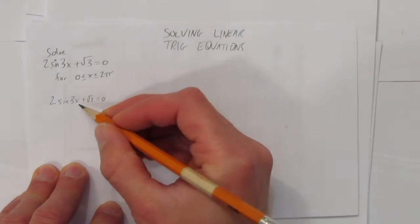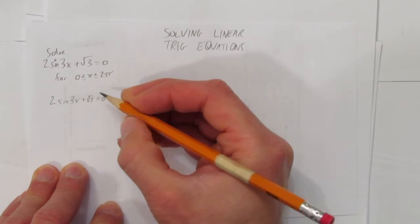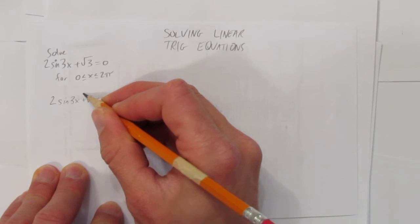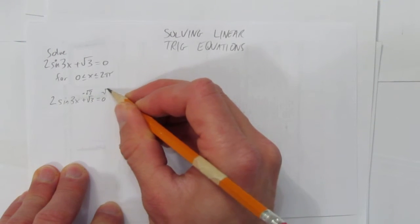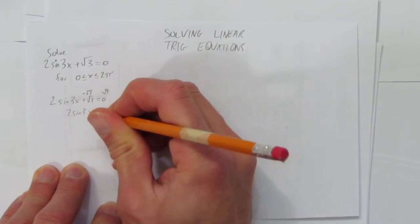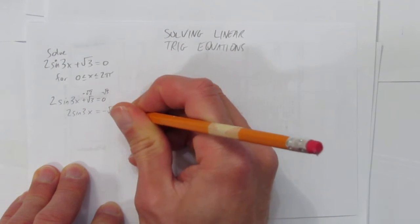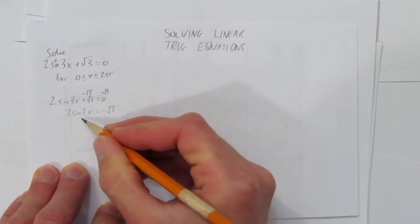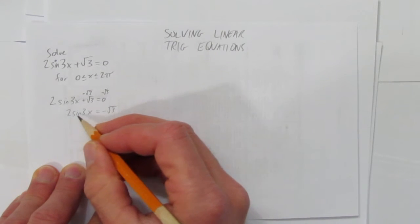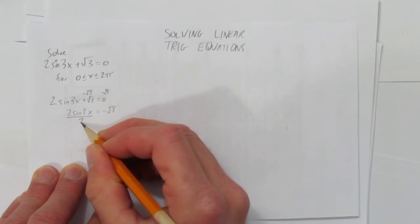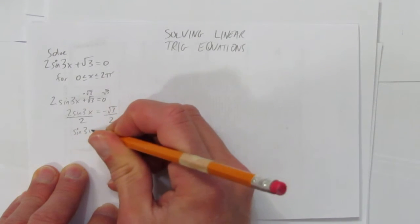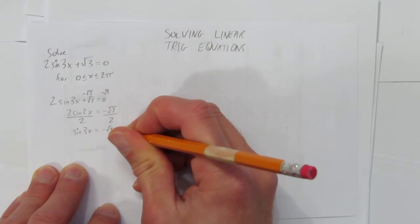So rearrange. I want to eventually get sin(3x) by itself. The first thing to do using inverse operations is get rid of the +√3 by doing -√3 on both sides. That gives me 2sin(3x) = -√3. My goal right now is just to get sin(3x) by itself. I can do that by getting rid of this coefficient, which is multiplying sin(3x), so I divide both sides by 2. I'm left with sin(3x) = -√3/2.